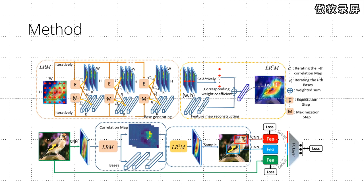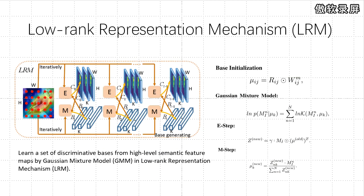At the sampling phase, the discriminative object patches are located by collecting local maximums from new low-rank feature maps. Next, we crop and resize the patches from the original image. Finally, the features of all branches are aggregated to produce the final recognition vectors.